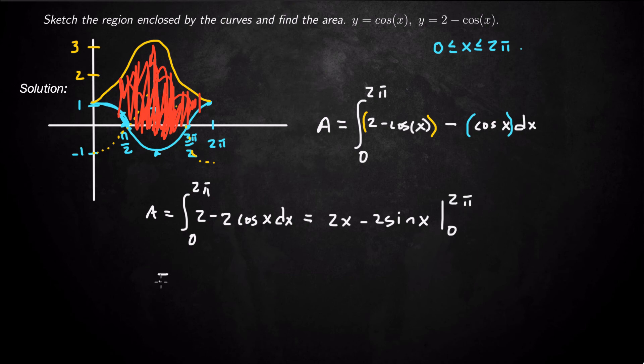When we plug in those bounds, that's going to be 2 times 2 pi minus 0 minus 2 times sine of 2 pi minus sine of 0.